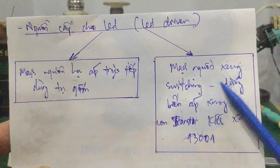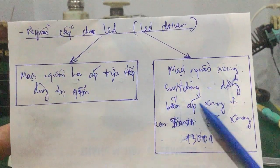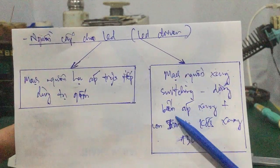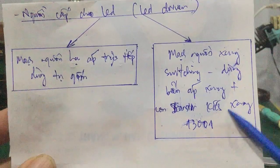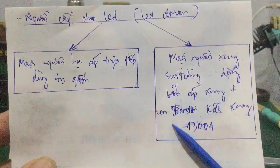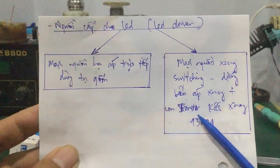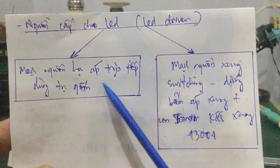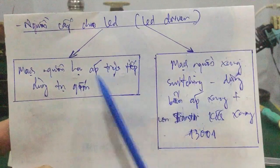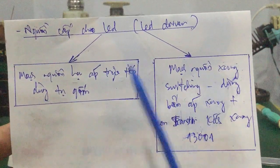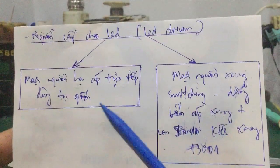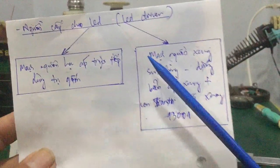Bên trong mạch nguồn xung này, nó sử dụng một cái biến áp xung và 2 con transistor: một con tạo dao động và một con kích xung. Ở đây nó dùng con transistor kích xung là 13001. Mình sẽ tháo 2 cái đèn này ra và tìm hiểu 2 cái mạch nguồn — nguồn xung và nguồn hạ áp.